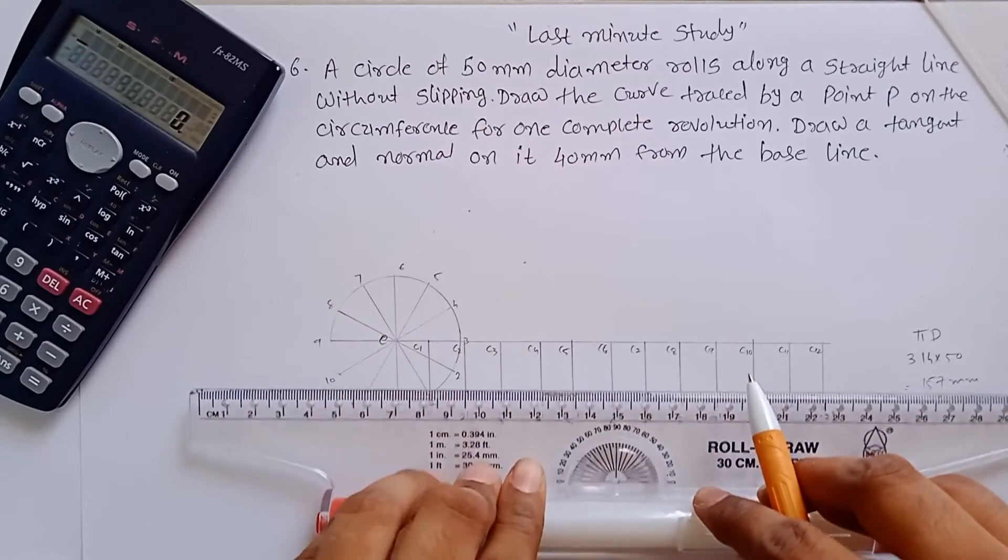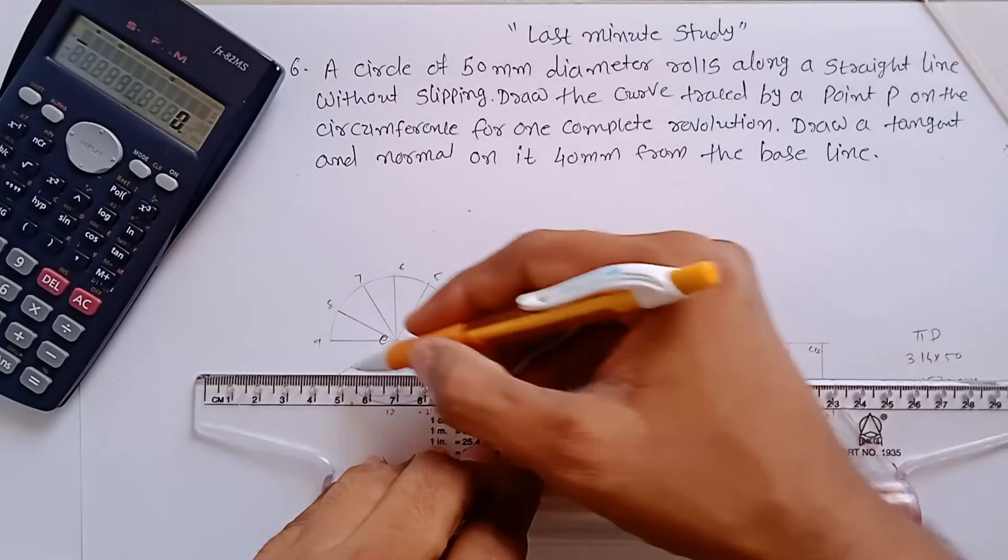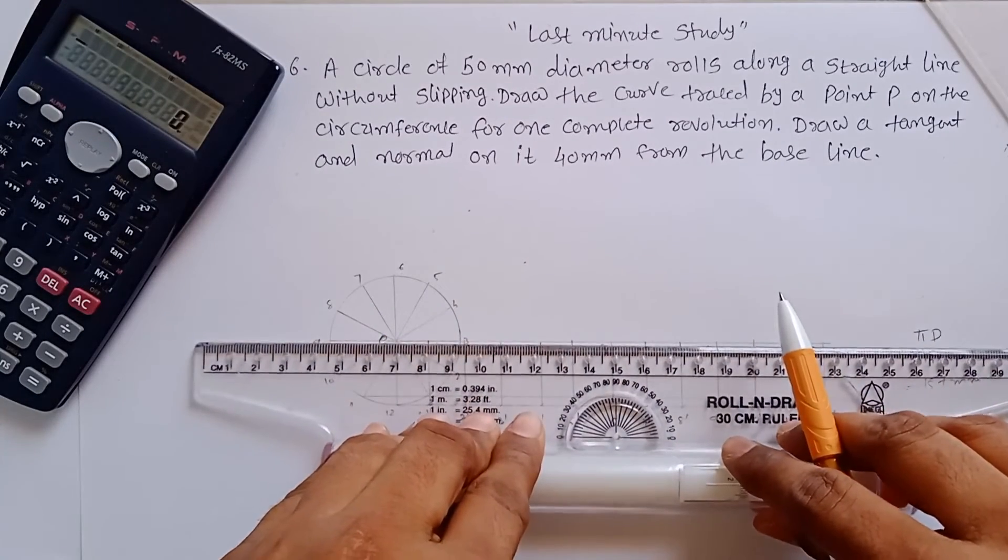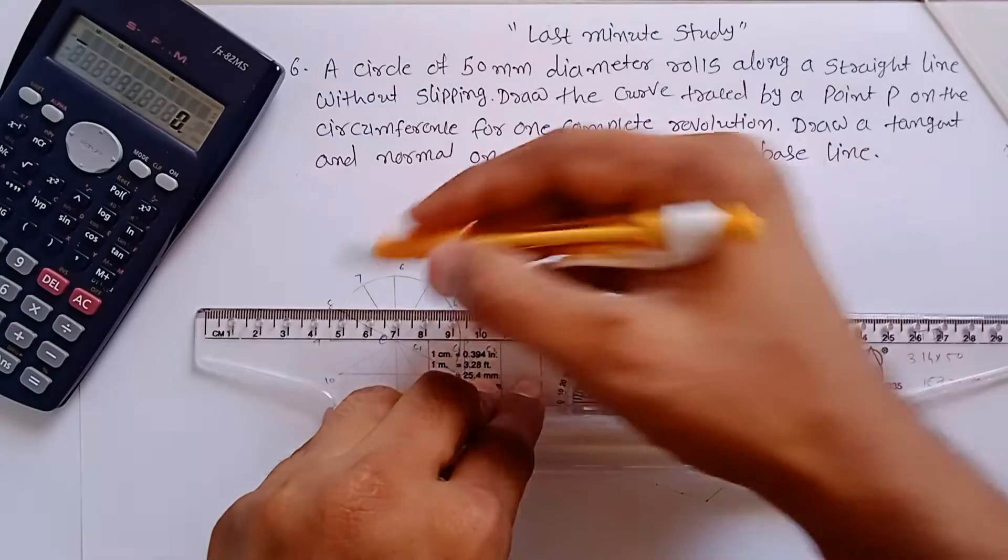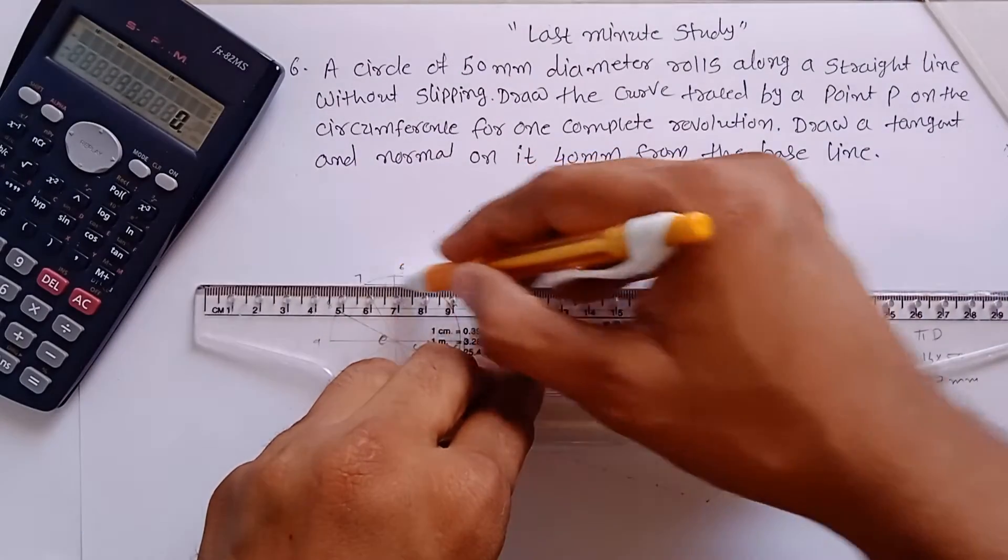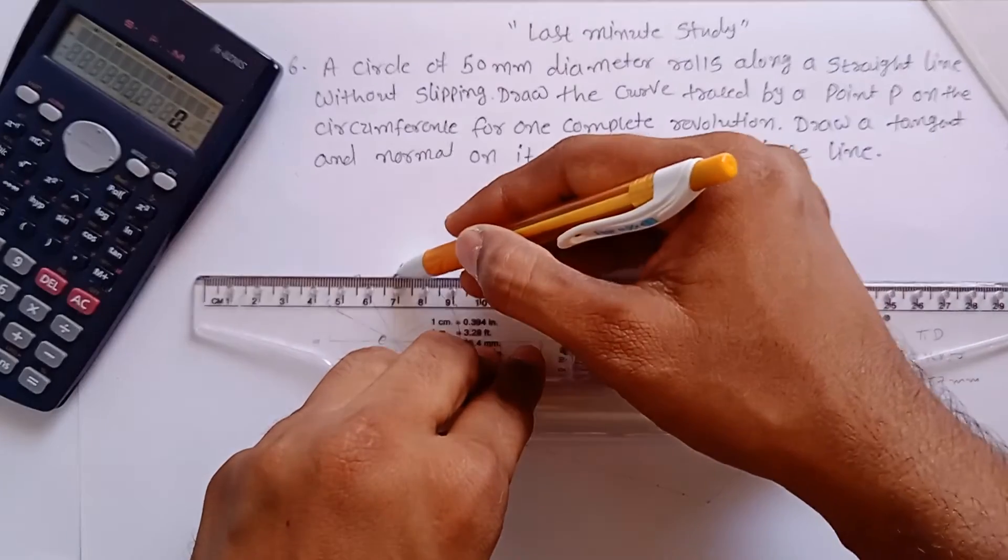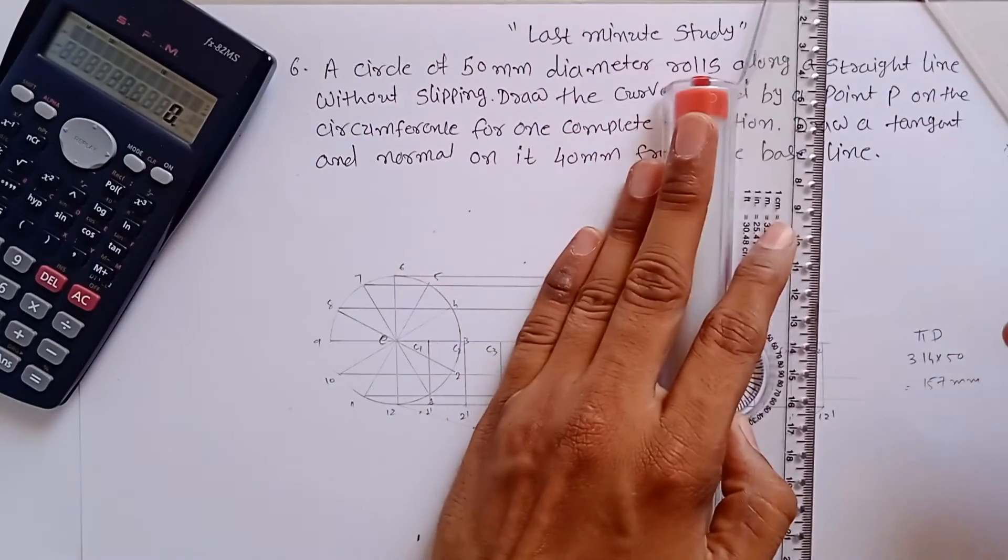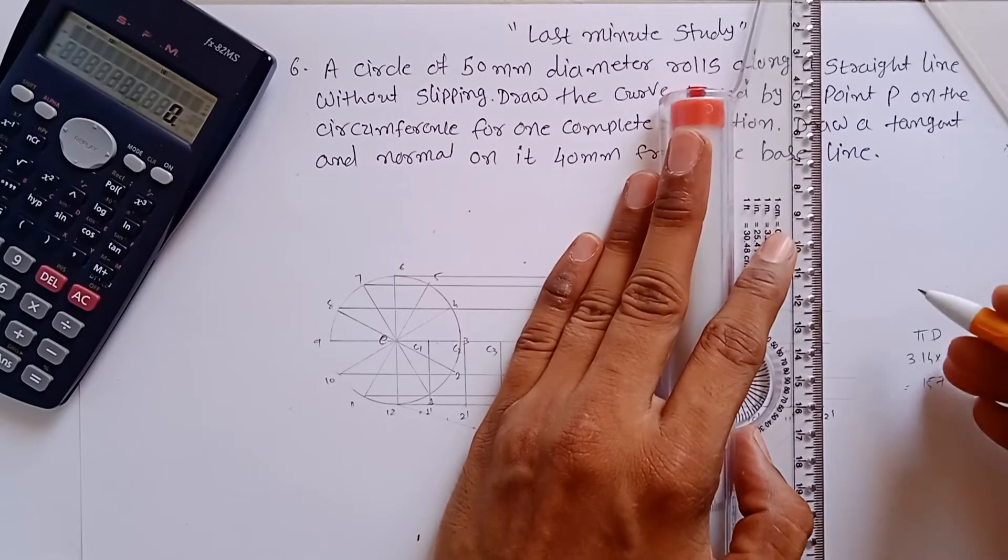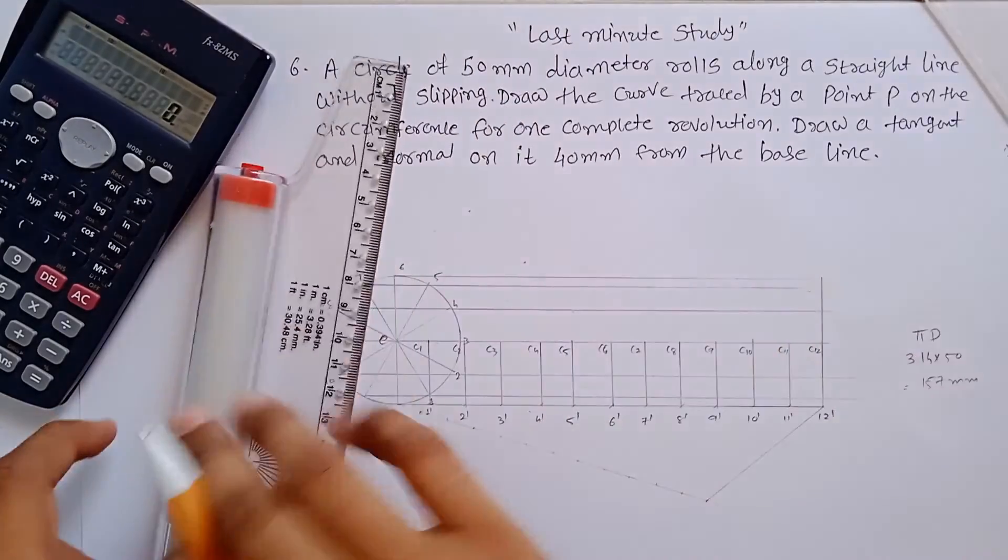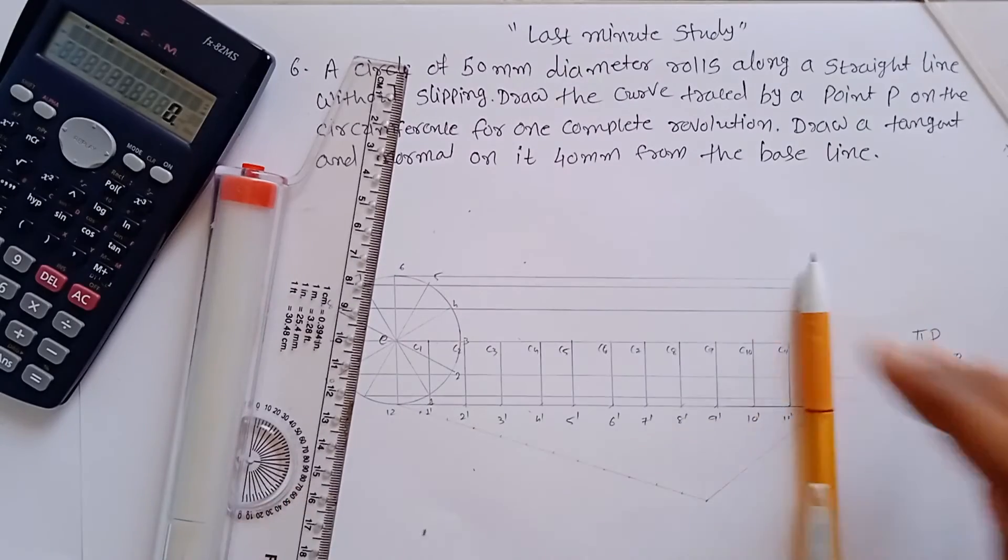Then 10 and 2, then 9 and 3, then 8 and 4, 7 and 5, and at the last 6. Now construct the whole rectangle at the end like this. We have constructed the whole lines now.